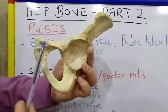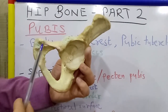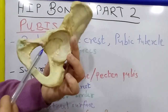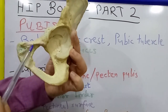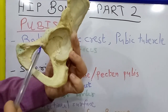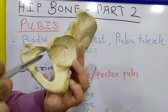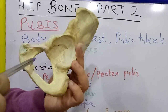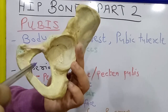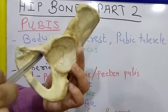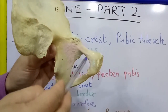Then there is an anterior border which extends from the pubic tubercle up to the acetabular notch. This anterior border is also known as the obturator crest. The third border is an inferior border which forms the anterior margin of the obturator foramen.